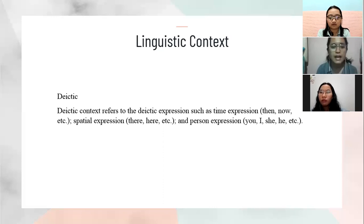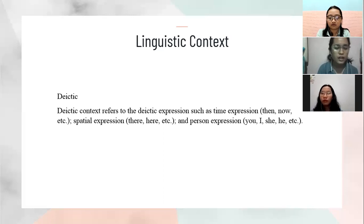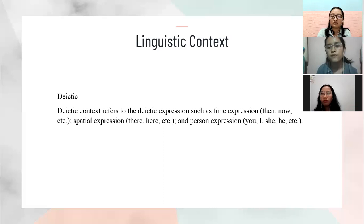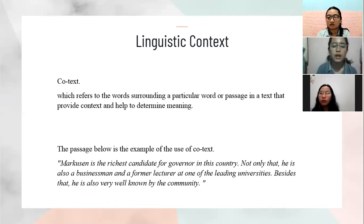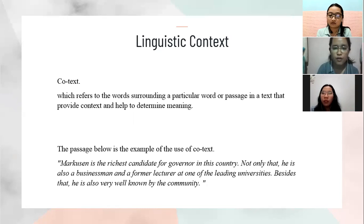The first is deixis. Deictic context refers to deictic expressions such as time expressions — for example, 'then' and 'now' — and also spatial expressions — like 'you,' 'I,' 'she,' 'he,' etc. In a language event, the participants involved must know the place and time they are in, and these things are directly related to deictic context. Deictic expressions can be used to build deictic rules in which the speaker addresses utterances to another person, to a particular place, or a particular time. The next one is cotext, which refers to the words surrounding a particular word or passage in a text that provide context and help determine meaning.